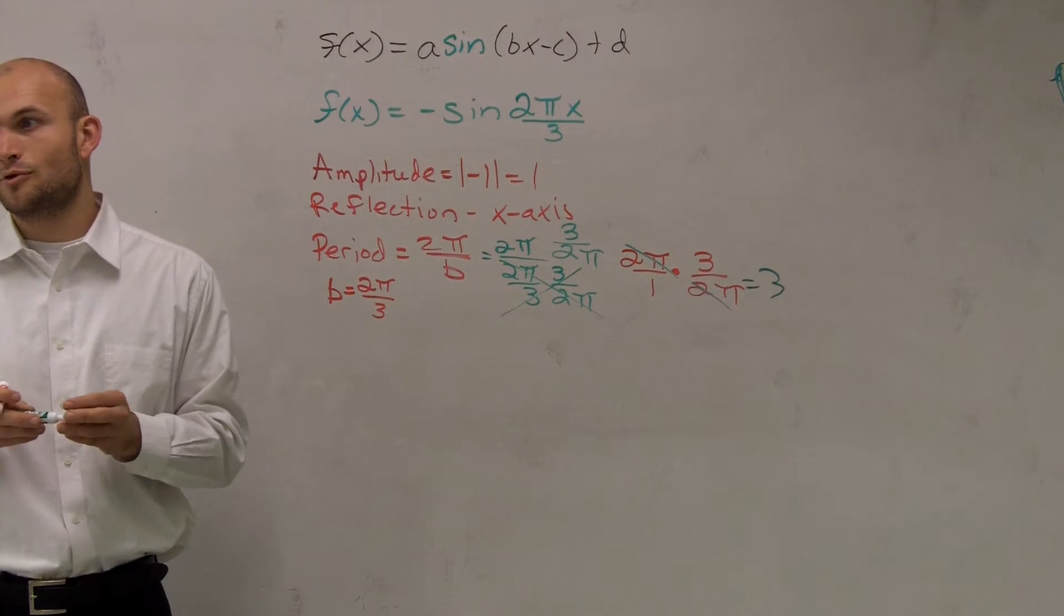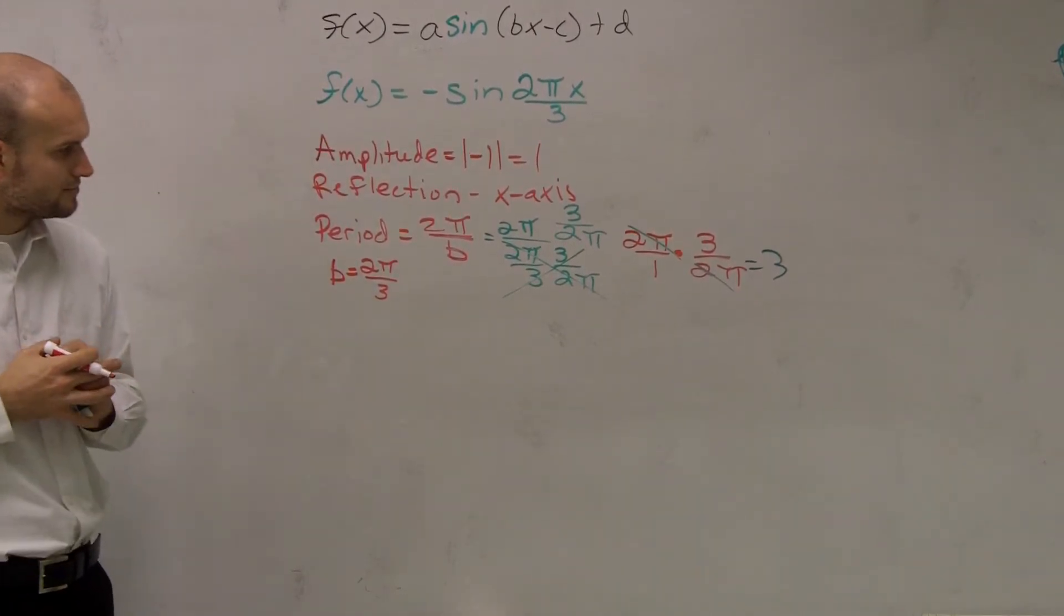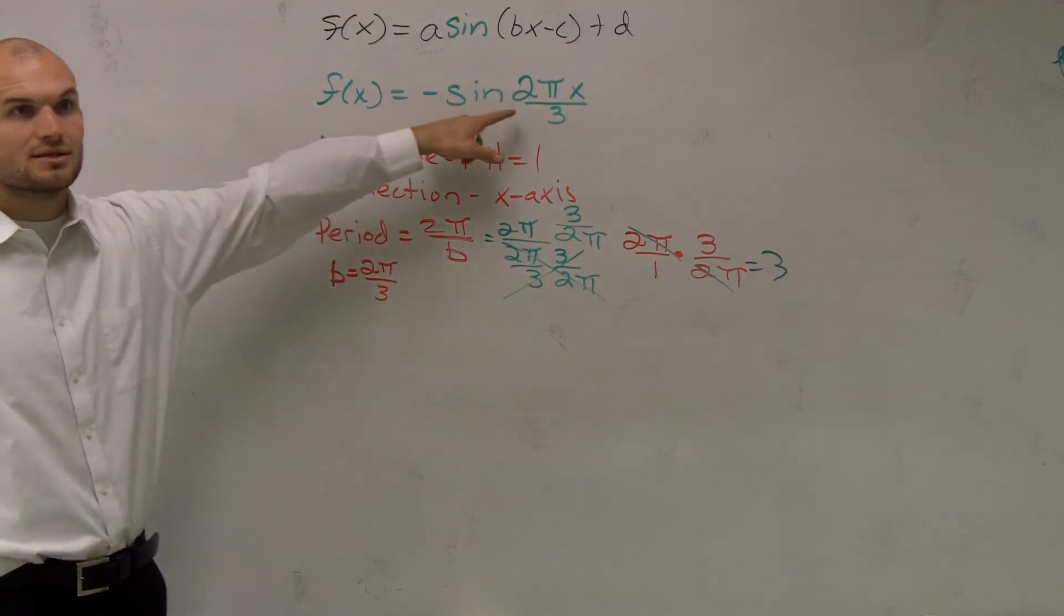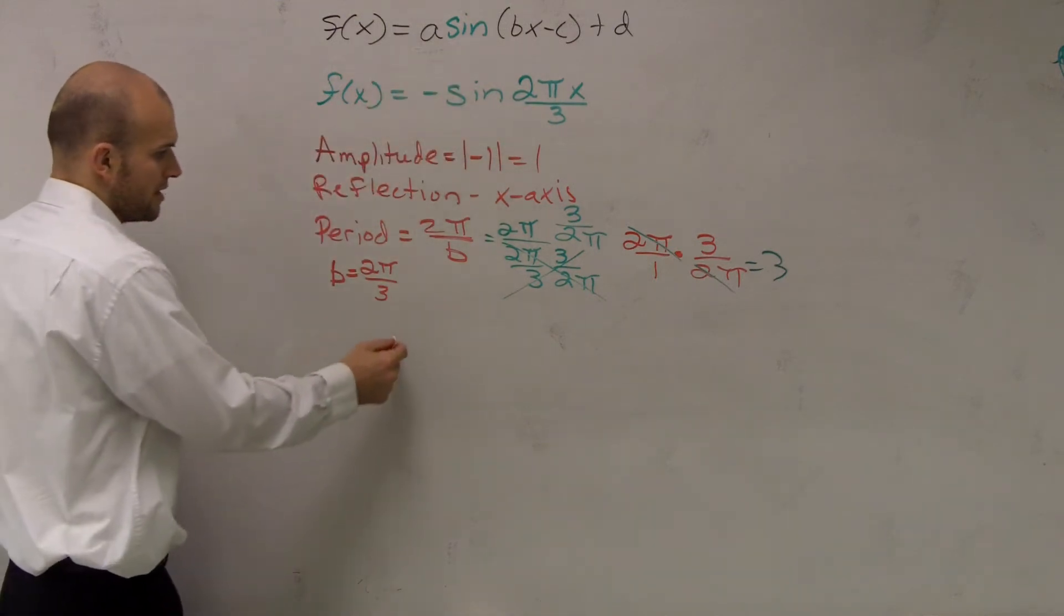It's not going to be fun for our 4 points. But we'll get through it. Then, so we found our period. And we look, is there any horizontal or vertical translation? No. So we can just go ahead and graph this as is.